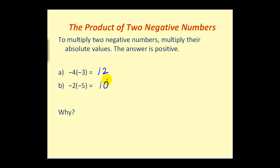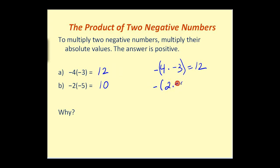Let's take a moment and justify why this would be true. Remember that when we write negative 4, we could think of this as the opposite of positive 4. So when I multiply this by negative 3, I could view it as the opposite of positive 4 times negative 3. Based upon our previous argument, positive 4 times negative 3 is negative 12, and the opposite of negative 12 is positive 12. Similarly, negative 2 times negative 5 is the opposite of 2 times negative 5, which is the opposite of negative 10, or positive 10.